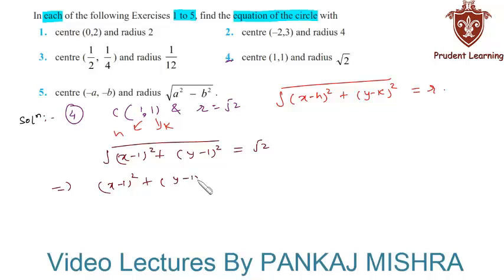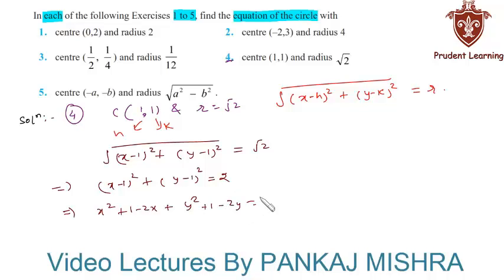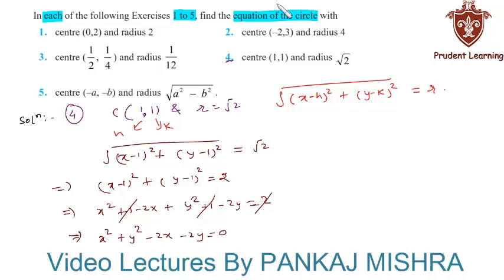Expanding (x minus 1) whole square gives x square plus 1 minus 2x, and expanding (y minus 1) whole square gives y square plus 1 minus 2y, equal to 2. Since 1 plus 1 is 2, we can cancel 2 on both sides, leaving x square plus y square minus 2x minus 2y equal to 0. Therefore the required equation of the circle is x square plus y square minus 2x minus 2y equal to 0.